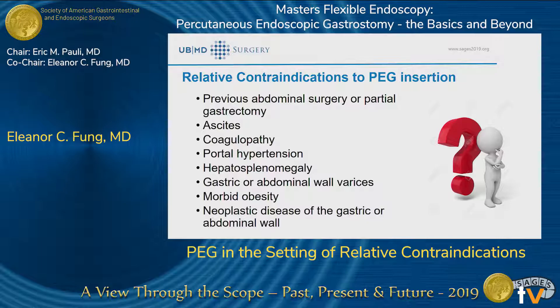Morbid obesity is another relative contraindication, purely because of the amount of fat between the skin and the stomach — you can sometimes not achieve a safe tract. And neoplastic disease of either the stomach or abdominal wall is a concern due to the risk of seeding.